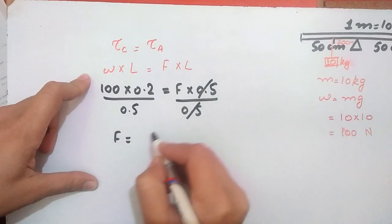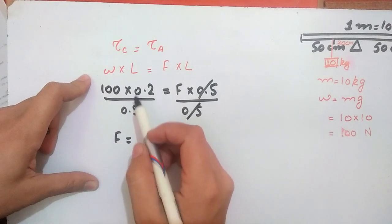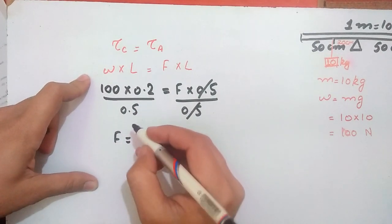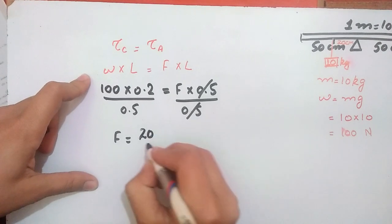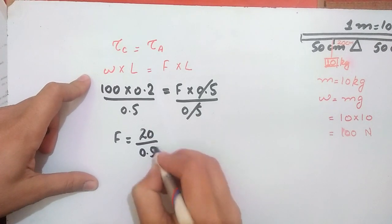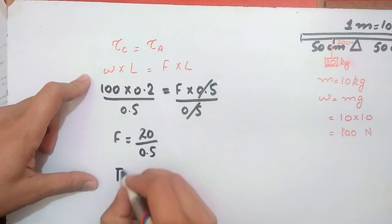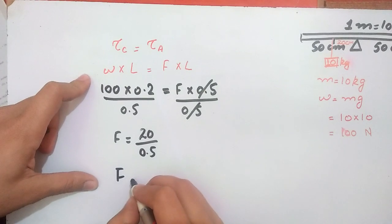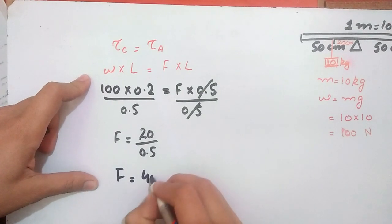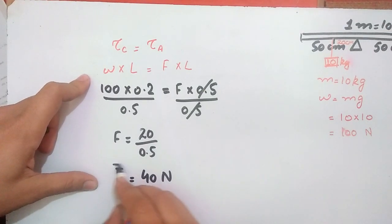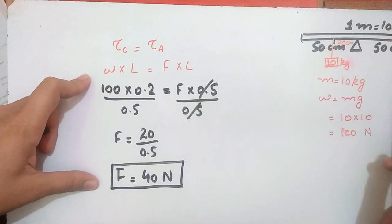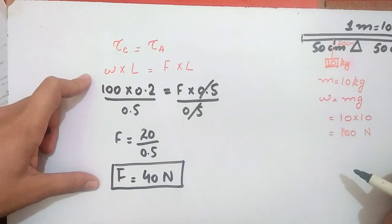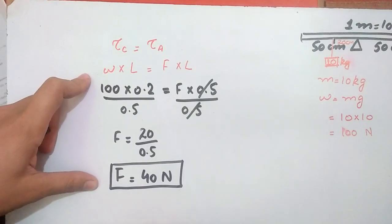Dividing: force equals 100 multiplied by 0.2 divided by 0.5, which equals 40 N. So the force required to balance the bar is equal to 40 Newton.